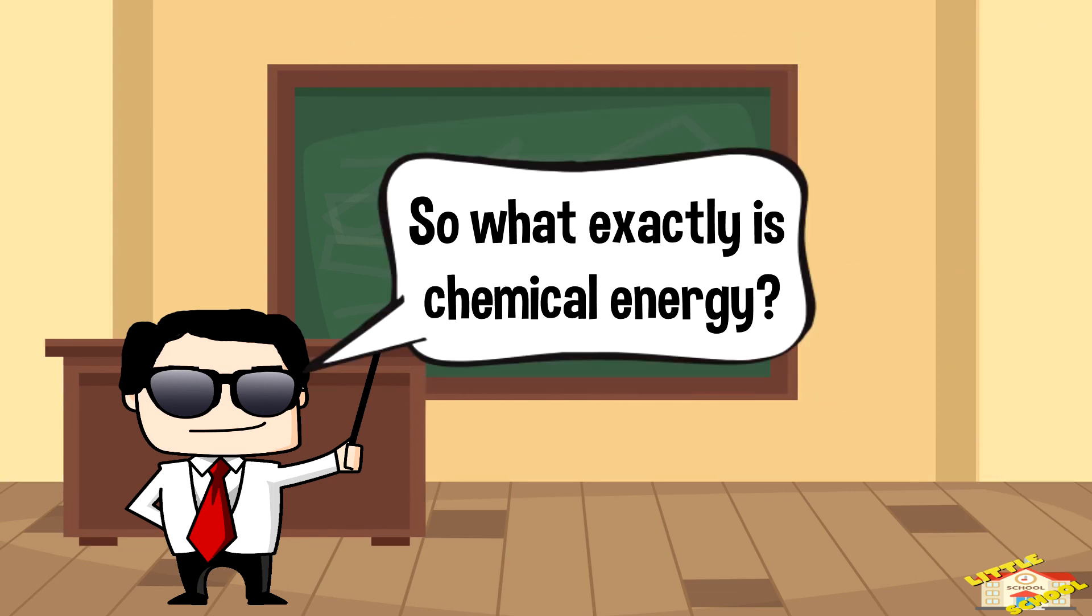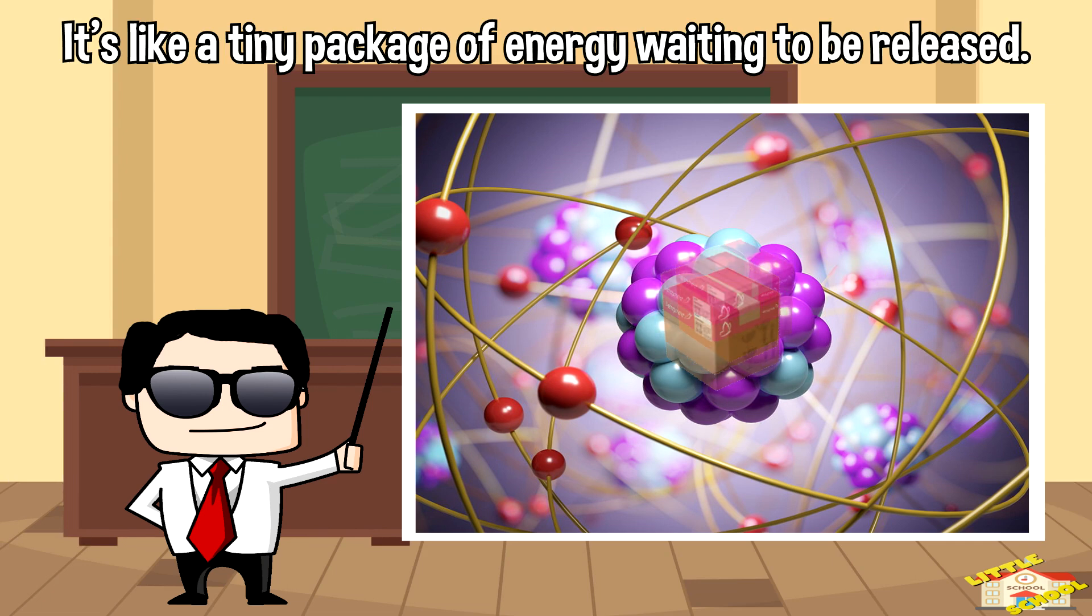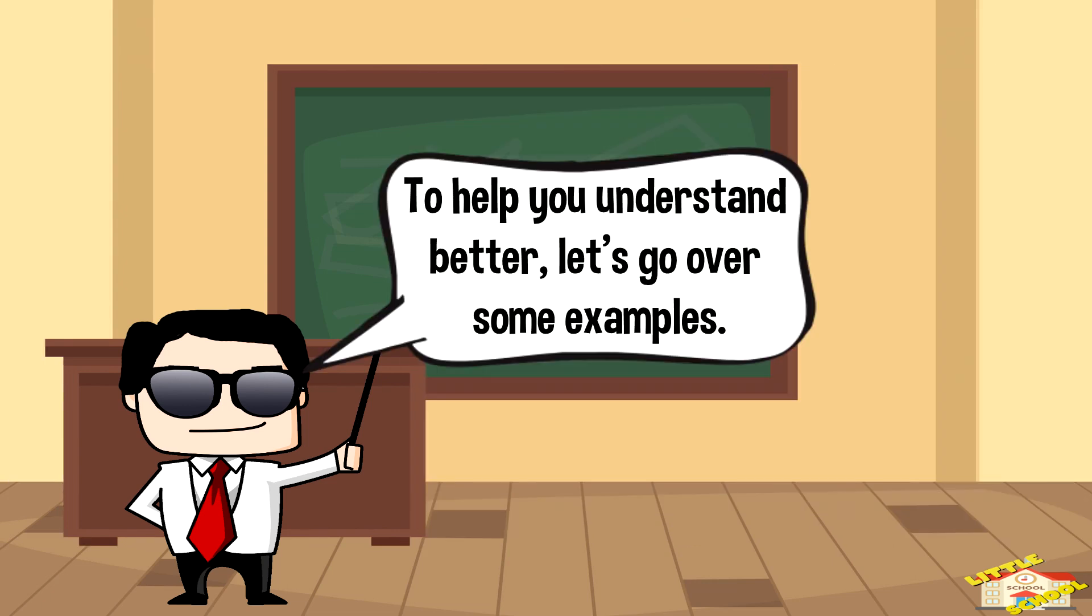So what is exactly chemical energy? Well, chemical energy is a type of potential energy that's stored in the bonds between atoms and molecules. It's like a tiny package of energy waiting to be released.